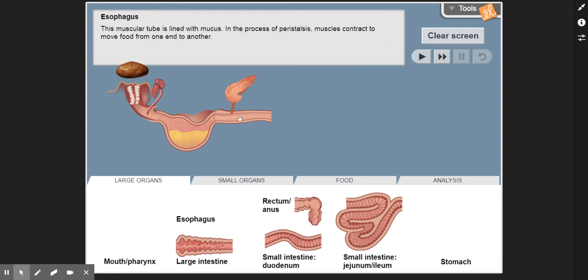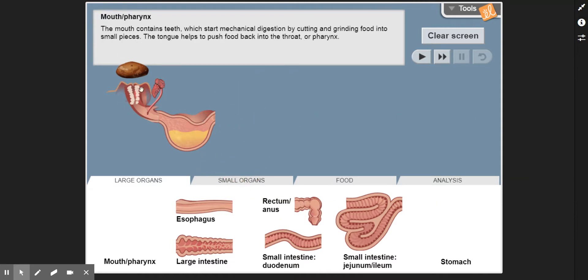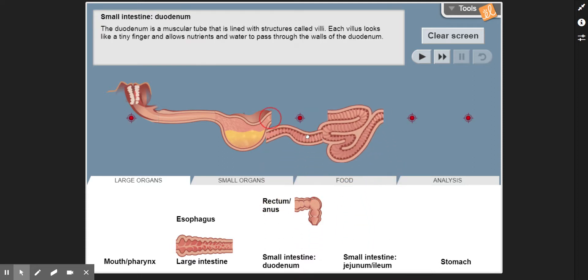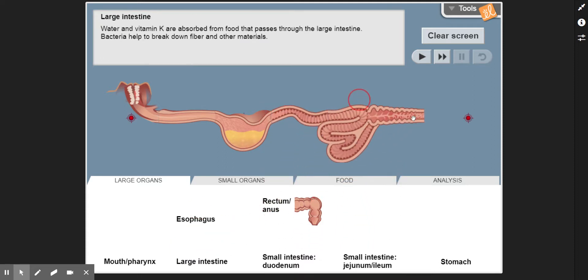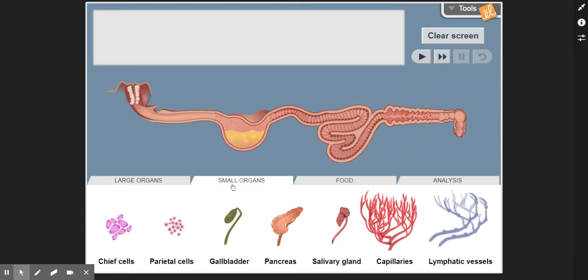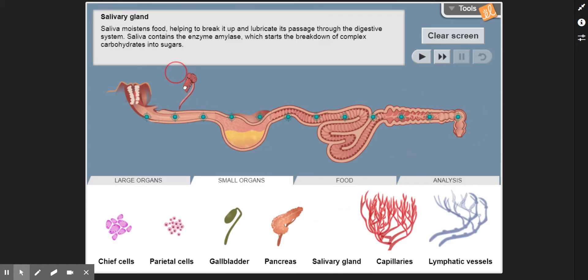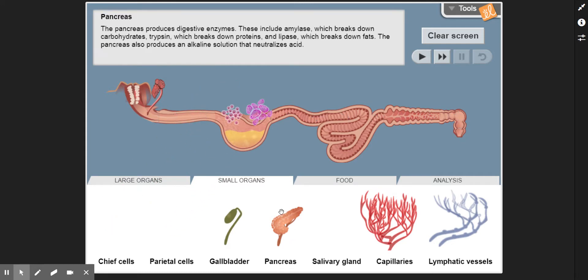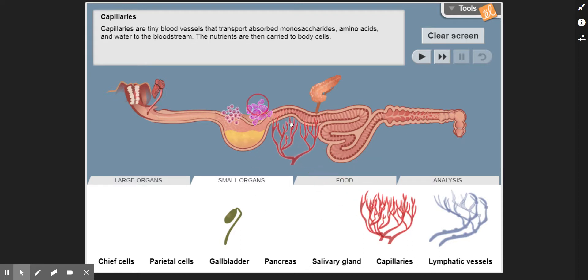The final question on here—and this is our big question, this is the one that we call the RACE questions: Restate, Answer, Cite, and Explain—this is where you're setting up the digestive system as they've given you in the gizmo. The small organs we've got: salivary gland, parietal cells, chief cells, our pancreas, we have capillaries, lymphatic vessels, and then the gallbladder.